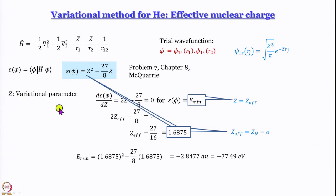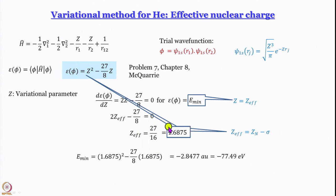Z is a variational parameter, so what we do is minimize epsilon with respect to Z, and at the minimum value we say Z equals Z_effective. Z_effective turns out to be 1.6875, and hence one can calculate sigma. E_min turns out to be minus 77.49 electron volts, which is close to the actual value but not close enough — if it were close enough, we could have closed the discussion right here.